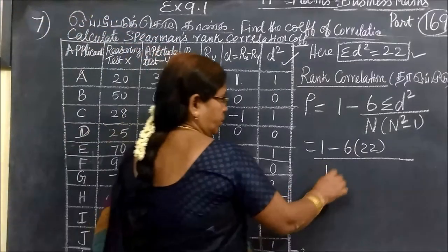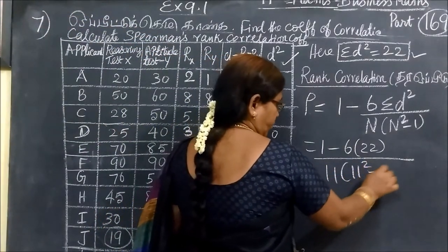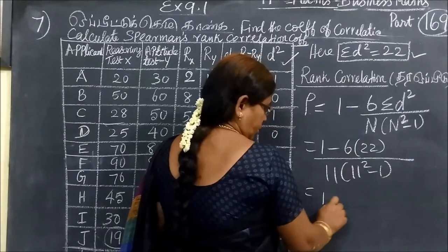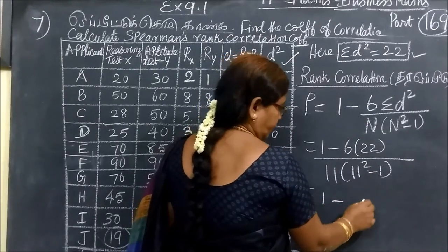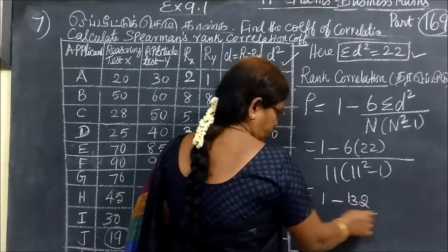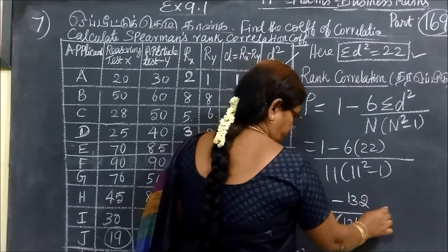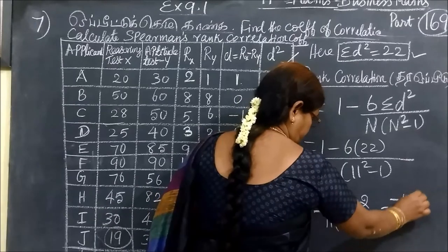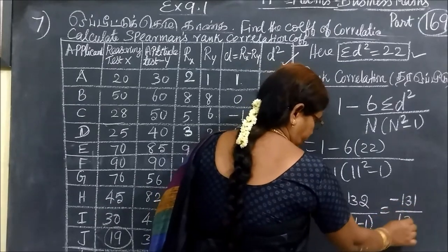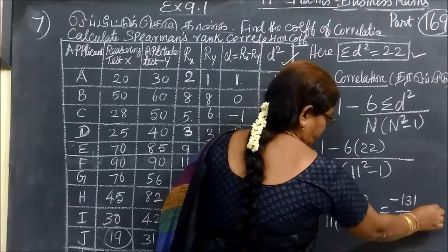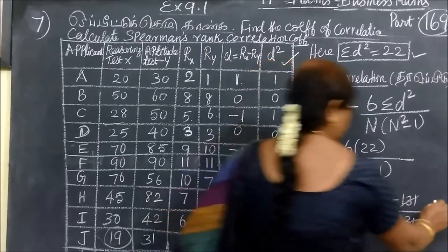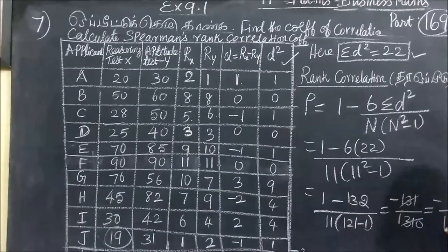Then 11 square minus 1. As you are usually going to do that. 132 by 11 into 121 minus 1. So 132 by 1320. So this answer is 1 by 10.